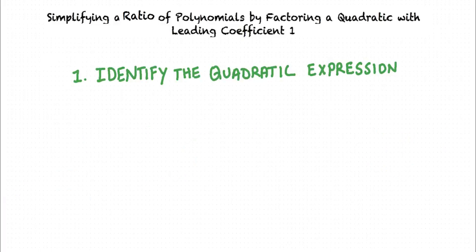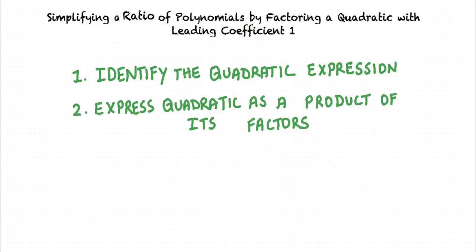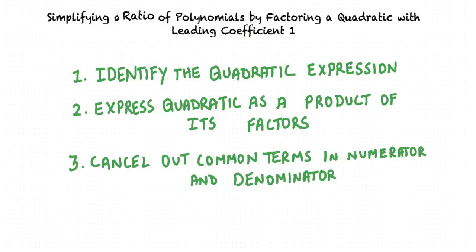In order to simplify a ratio of polynomials by factoring a quadratic, we first look for the quadratic expression, which might be in the numerator, denominator, or both. We then express the quadratic expression as a product of its factors in the given ratio. We finally cancel the common terms in the numerator and the denominator.